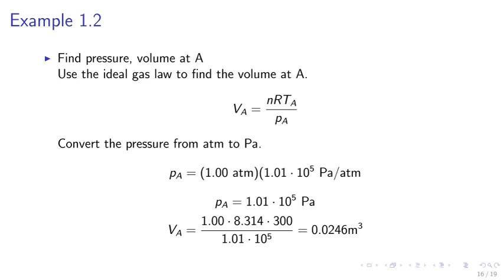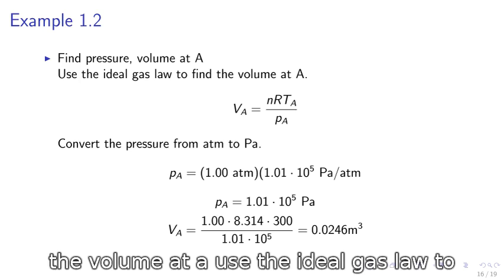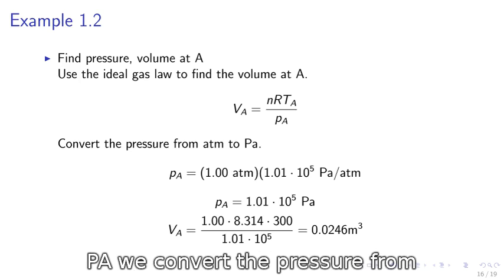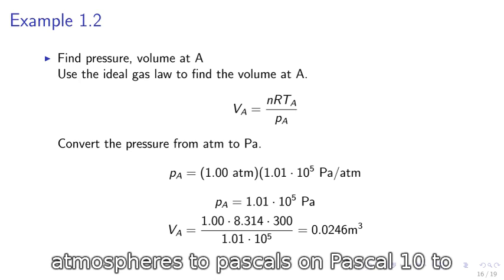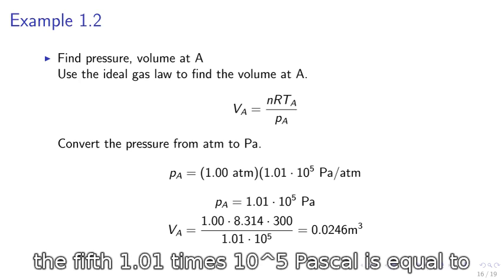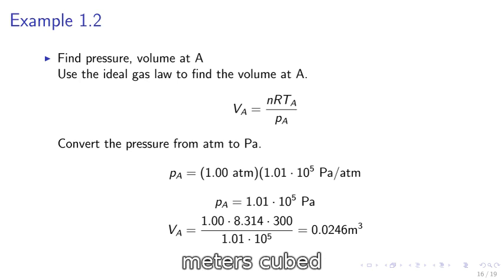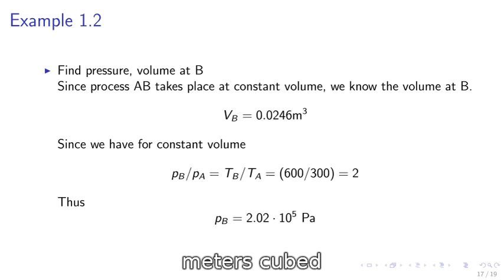Example 1.2. We may find the pressure and the volume at A. We use the ideal gas law to find the volume at A: VA equals NRT over PA. We convert the pressure from atmospheres to Pascals. 1.01 times 10 to the 5th Pascal equals 1 atmosphere. VA equals 0.0246 meters cubed.